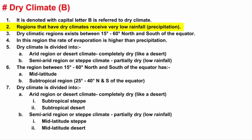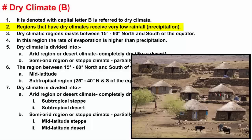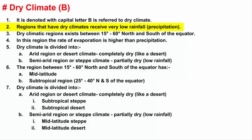Regions that have dry climates receive very low rainfall. That's obvious because dryness is associated with less rainfall. Keep in mind there is low rainfall — I'm not saying zero rainfall. So naturally, if rainfall is less, then growth of plants will be low. That means vegetation cover or forest will be less.